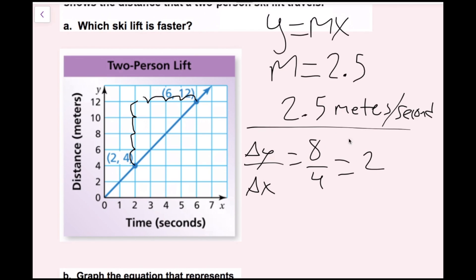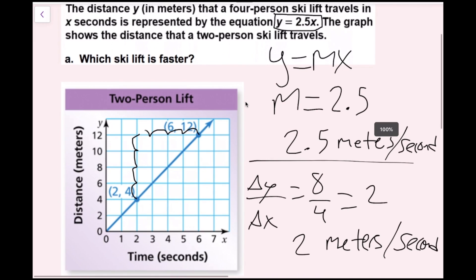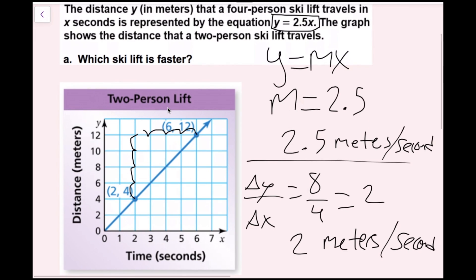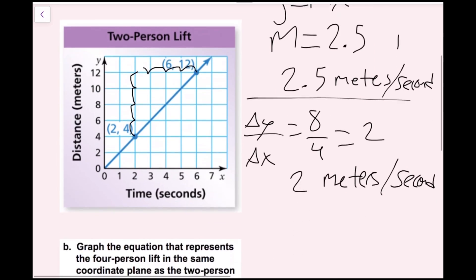So instead of 2.5 meters per second, the two-person lift is 2 meters per second. That means the four-person chairlift is going to be faster than the two-person chairlift. So the four-person lift is faster. Now we're done with part a and we're going to do part b next.